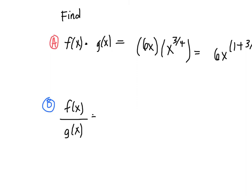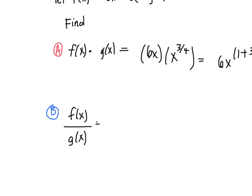Now let's divide f of x by g of x. So f of x, which is 6x, and then g of x, which is x to the 3 fourths. And remember when we divide exponents, we are going to subtract them. So 6x, 1 minus 3 fourths.